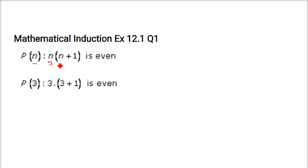So just put 3 here in place of n, you get 3 into 3 plus 1. And this is 3 into 4, which is 12, which is an even number.